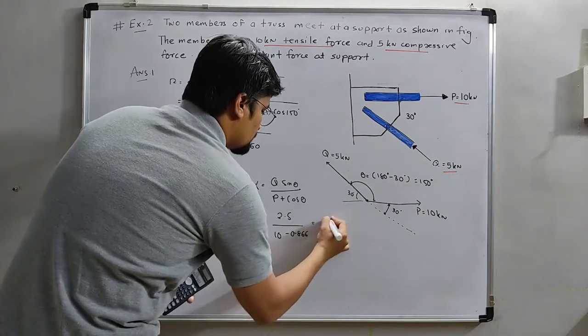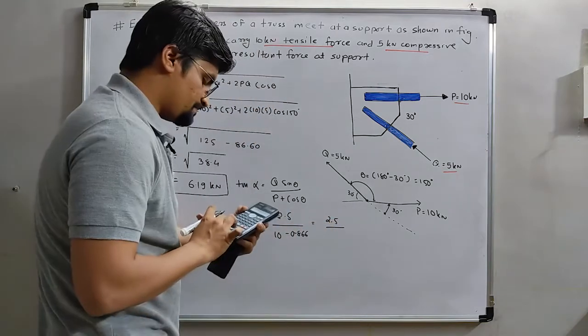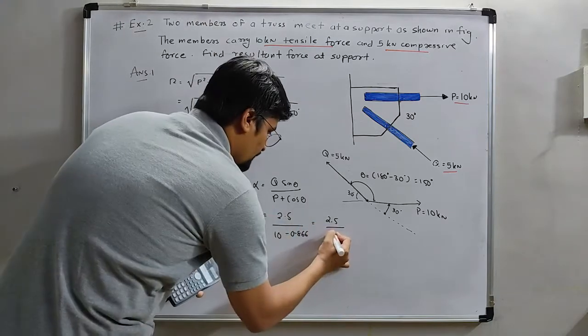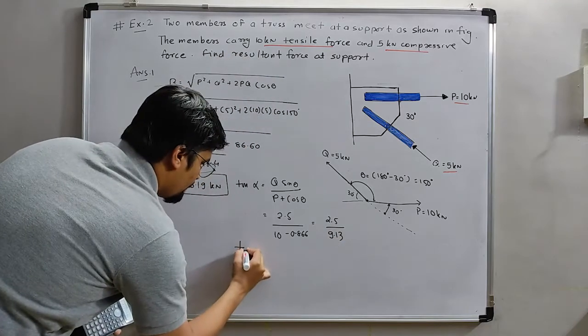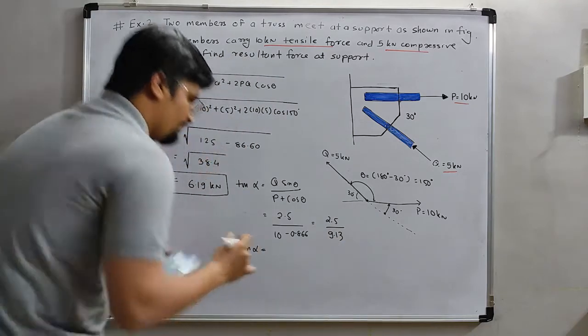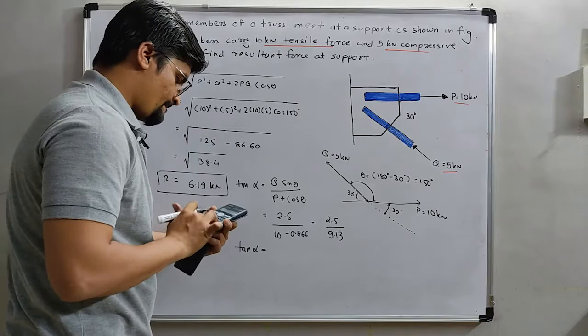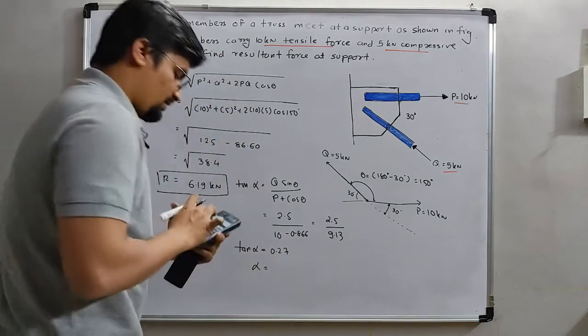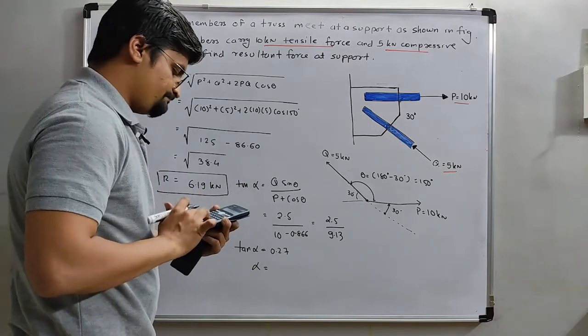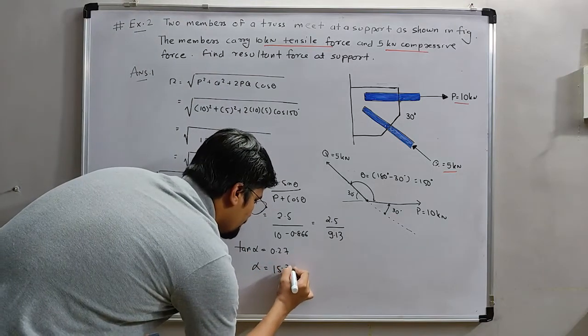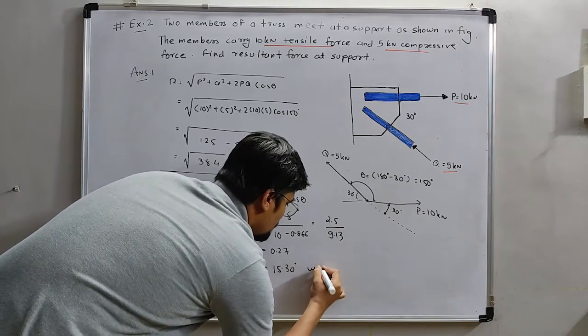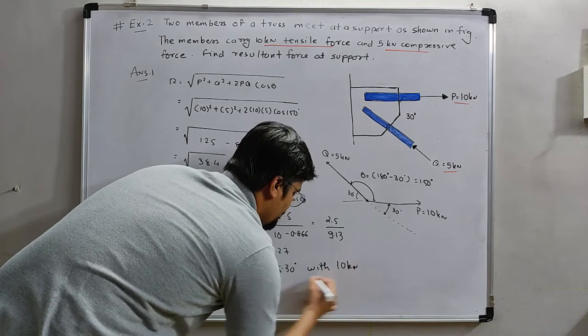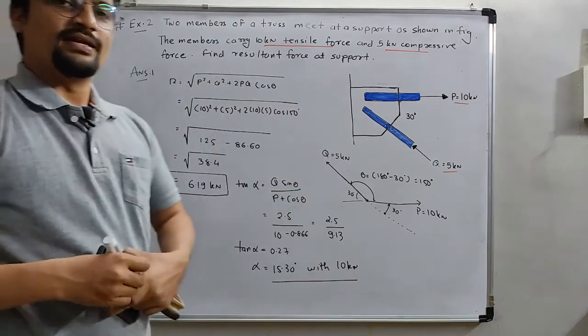The answer will be 2.5 divided by 9.13. So tan alpha will be 0.27. Alpha will be tan inverse, answer 15.30 degree with 10 kN, with the line of 10 kN.